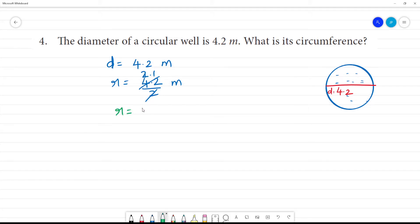Now we need to find circumference. Circumference is equal to 2πr. 2 into 22 by 7 into r, that is 2.1 meter.